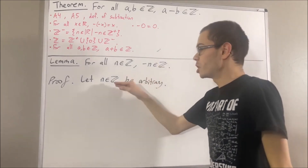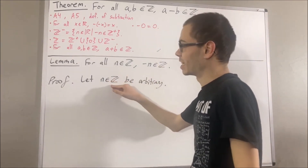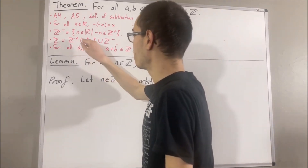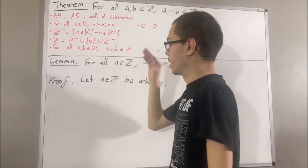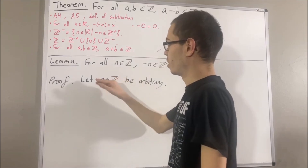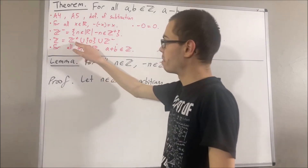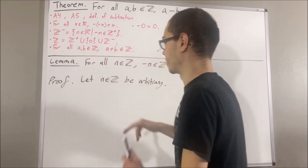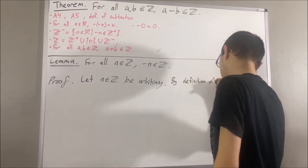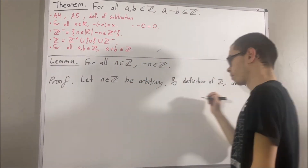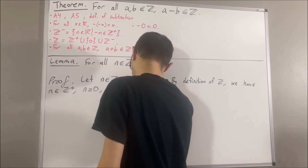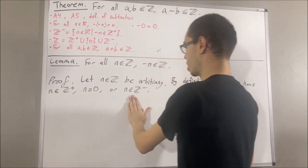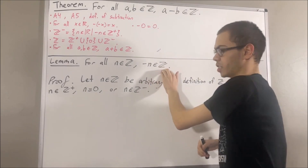By definition of the integers, since n is an integer, this tells us that n belongs to at least one of these three sets. In other words, we have n is a positive integer, n is equal to zero, or n is a negative integer. In all three cases, we're going to show that the negative of n is an integer.